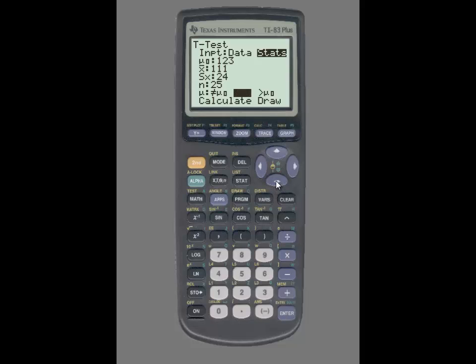Go to Calculate, press enter, and on this next screen you'll see the value of the test statistic as well as the p-value. Since the p-value is less than alpha, then we have enough evidence to reject the null hypothesis.